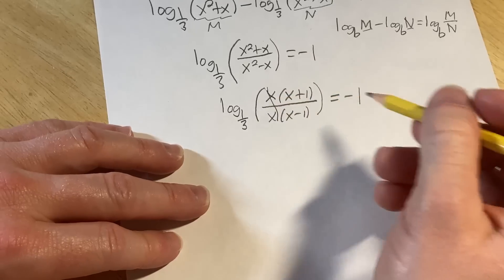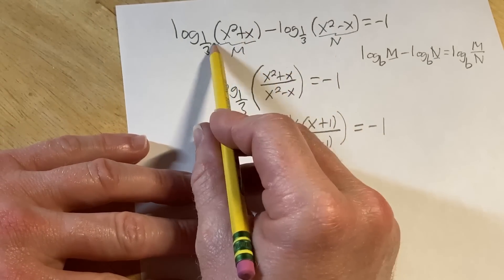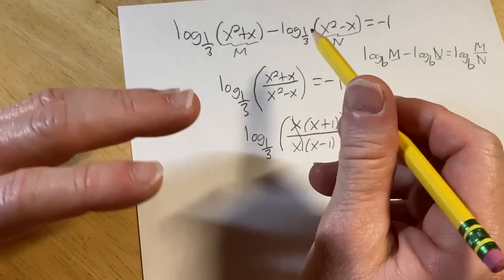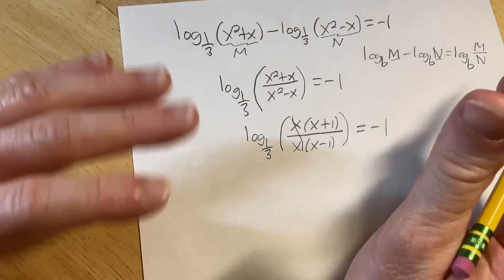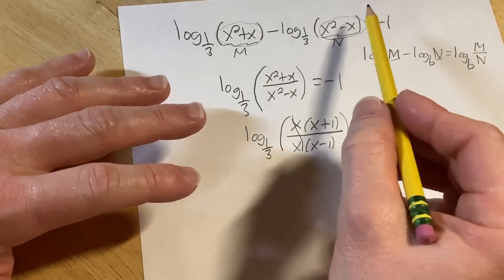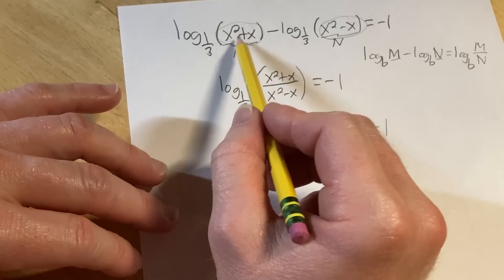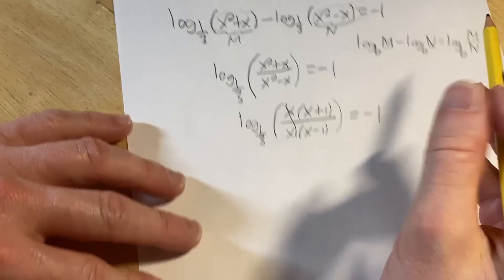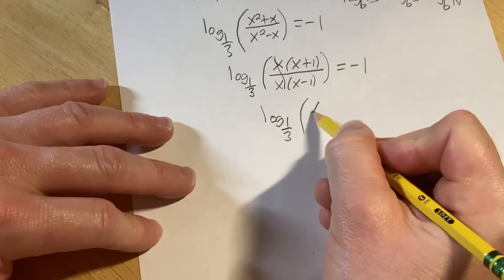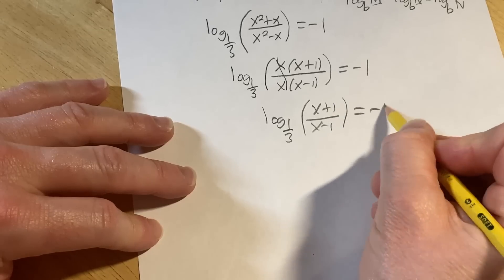We can cancel the x's, assuming they're not zero, and x can't be zero anyways, right? Because if x were zero, you get the log of zero, and as we said earlier, the log function doesn't have any negative numbers, or zero, in its domain. Only positive numbers are allowed in the domain of log. In fact, the domain of log is all the positive numbers, so you just basically can't plug in zero or a negative number into the log function. Let's rewrite this. This is the log base one-third of x plus one over x minus one, and that's equal to negative one.